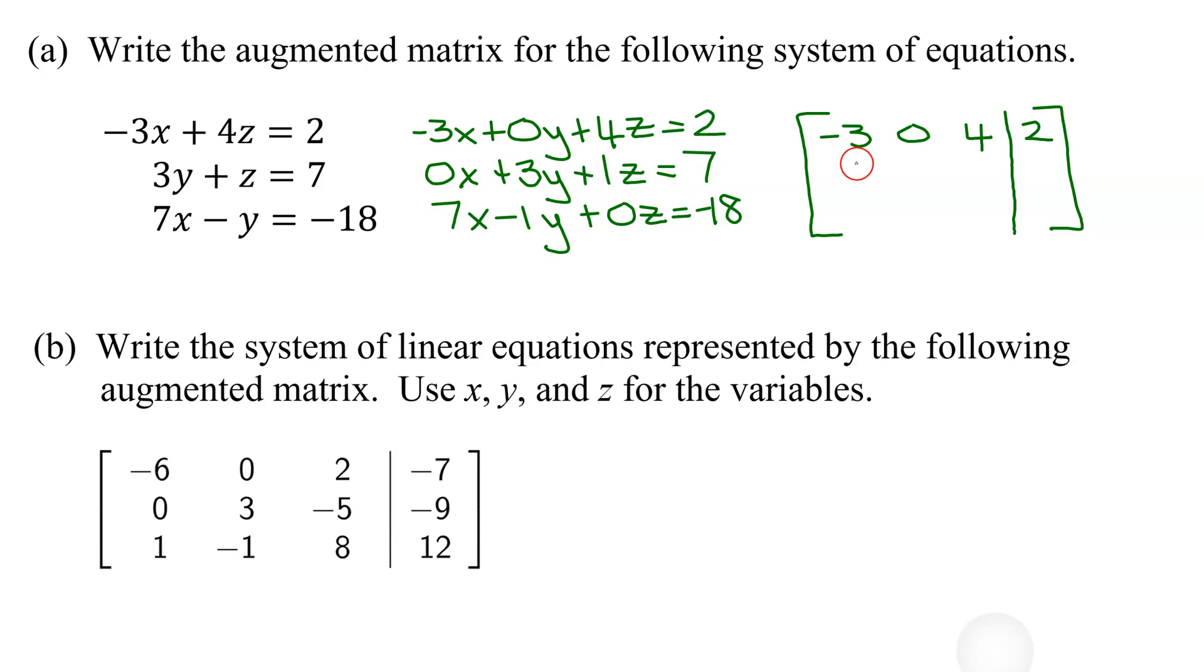Row 2, 0, 3, 1, and 7. Row 3 is 7, negative 1, 0, and negative 18. So there is the augmented matrix for this system.